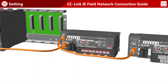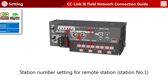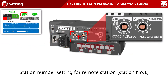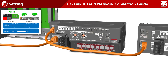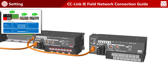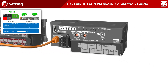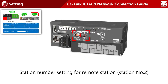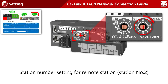Station numbers for remote stations are set using the switch on the front of the module. Set the station number for remote station number one to one, and set the station number for remote station number two to two.